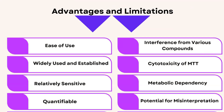Advantages of the MTT assay include ease of use, being widely established, and being a relatively sensitive and quantifiable assay. Limitations include interference from various compounds that may alter results, potential cytotoxicity of MTT itself, metabolic dependency, and the potential for misinterpretation or false results.